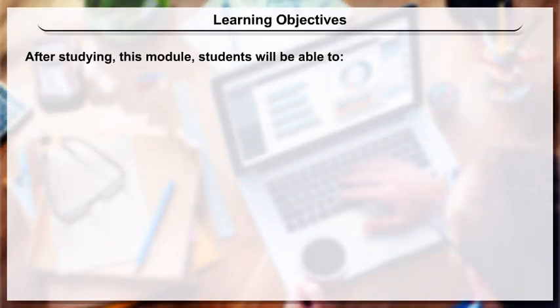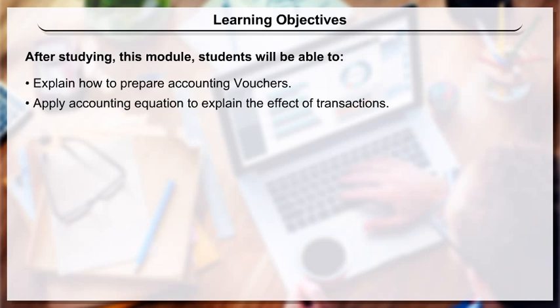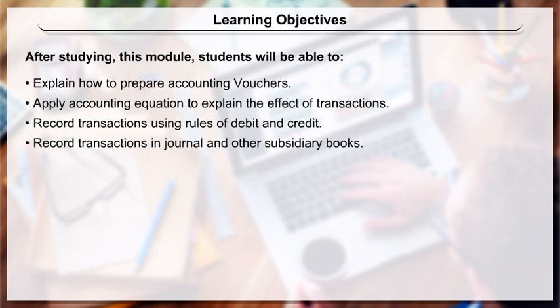Learning Objectives: After studying this module, students will be able to explain how to prepare accounting vouchers, apply the accounting equation to explain the effect of transactions, record transactions using rules of debit and credit, and record transactions in journal and other subsidiary books.